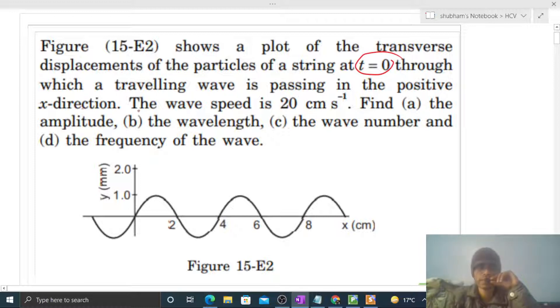In the positive x direction, the wave speed is 20 cm per second. Find the amplitude. What is amplitude? Maximum possible displacement of the particles in transverse direction. So maximum possible displacement, you can see here, maximum displacement of the particles in transverse direction that is 1 mm. So amplitude will be simply 1 mm.